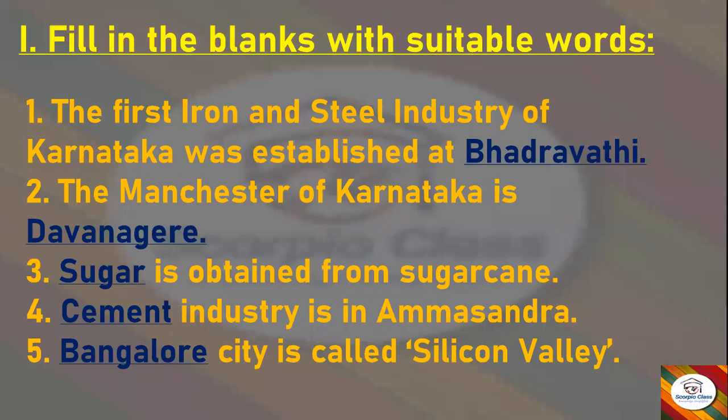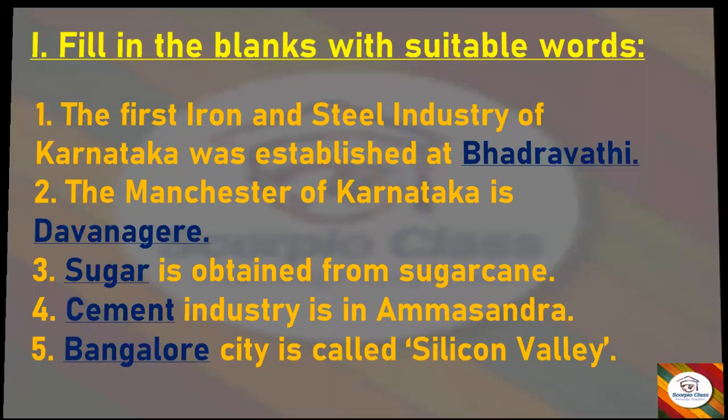Let's get started with the first section: Fill in the Blanks. The first iron and steel industry of Karnataka was established at — Bhadravati. The Manchester of Karnataka is — Davanagiri. Dash is obtained from sugarcane — Sugar. Dash industry is in Ammasandra — Cement. Dash city is called Silicon Valley — Bangalore. This finishes our fill in the blanks.